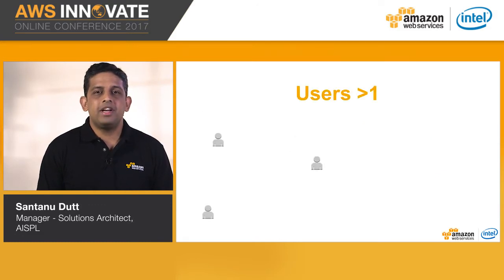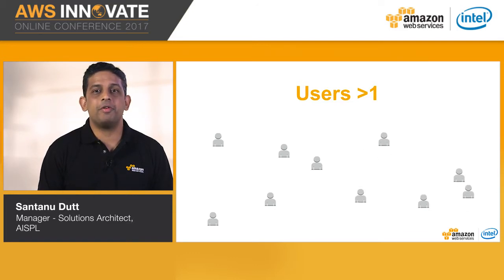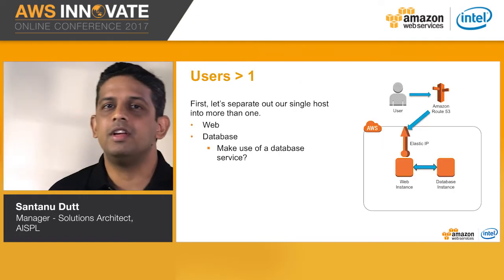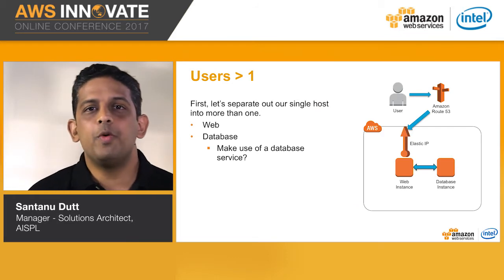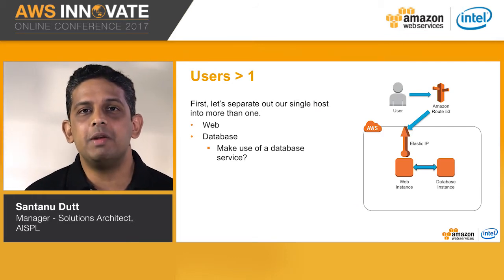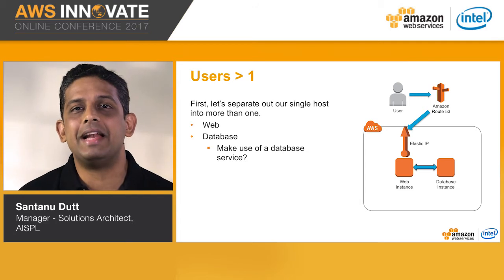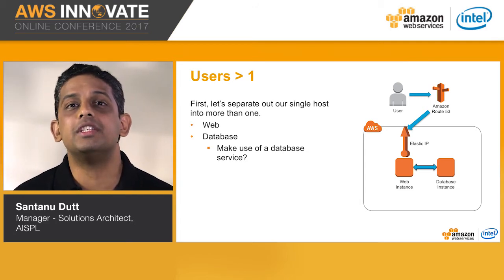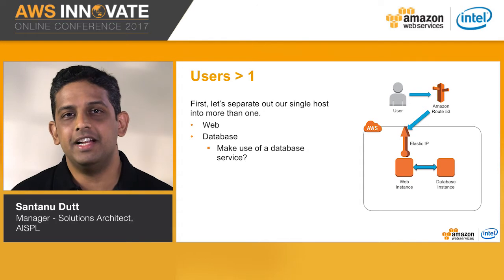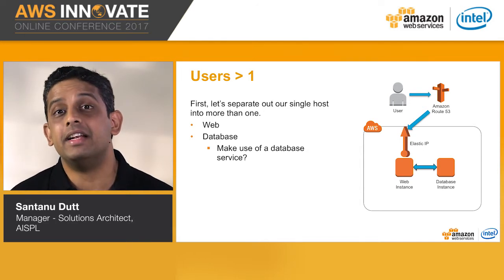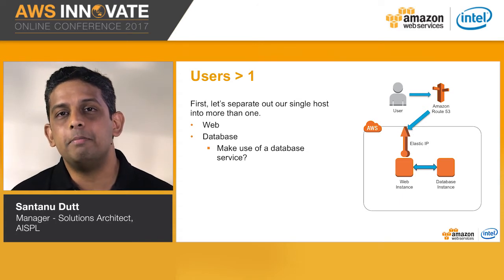So if we consider the next stage where the number of users is increasing — some of your friends have heard about your web app and are starting to come to your website. The first thing we can do to address the issues of too many eggs in one basket is to split our web app and database into two different instances. This gives us much more flexibility in scaling these two tiers independently.